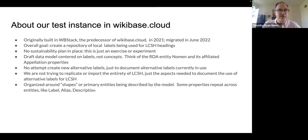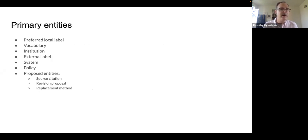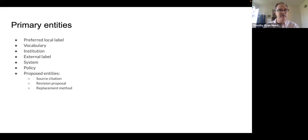We are also not trying to replicate or import the entirety of LCSH, just the aspects needed to document the use of alternative labels for LCSH. We have organized the data model around shapes or primary entities described by the model. Some properties repeat across entities. Every entity has a label, possibly an alias and a description. The primary entities include 'preferred local label' and 'external label.' Both may be part of a vocabulary and could be used by a given institution. We also added 'system' and 'policy' entities, but never fully completed modeling them.